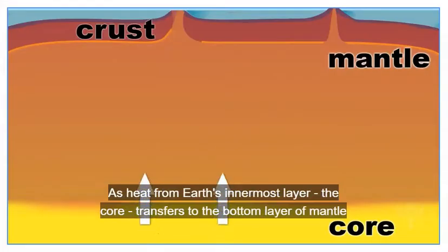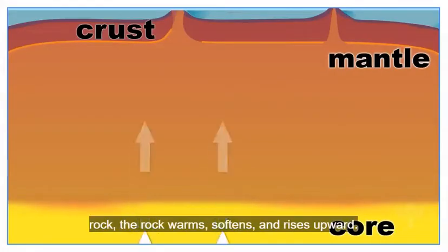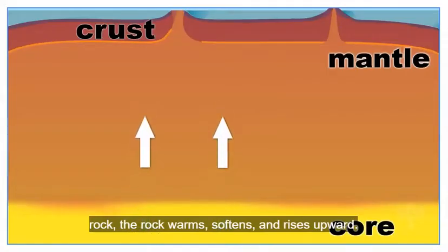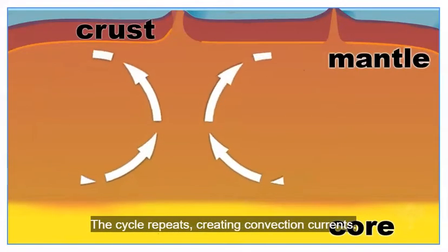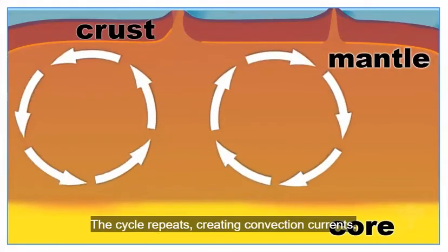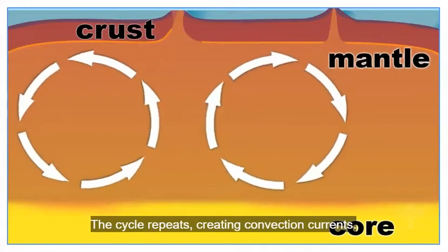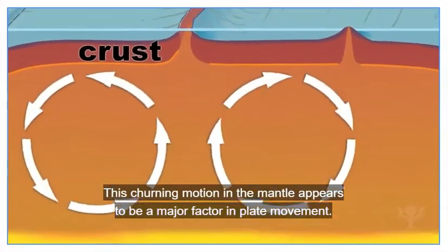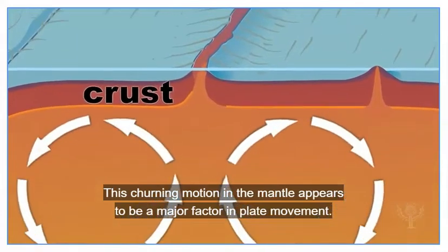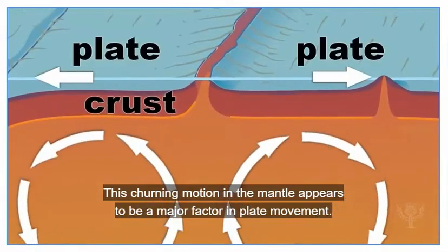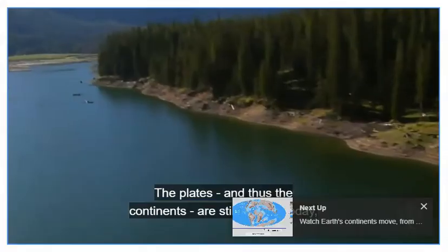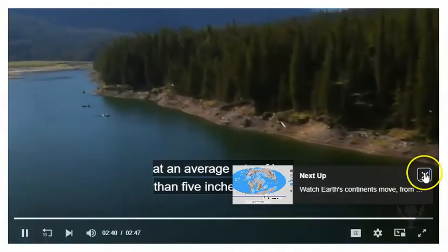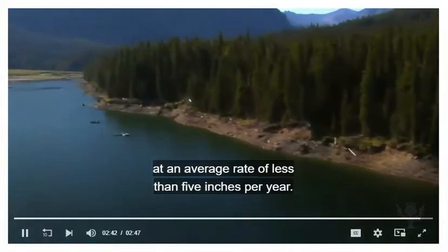As heat from Earth's innermost layer, the core, transfers to the bottom layer of mantle rock, the rock warms, softens, and rises upward. This pushes cooler rock downward, and the cycle repeats, creating convection currents. This churning motion in the mantle appears to be a major factor in plate movement. The plates, and thus the continents, are still moving today at an average rate of less than five inches per year.